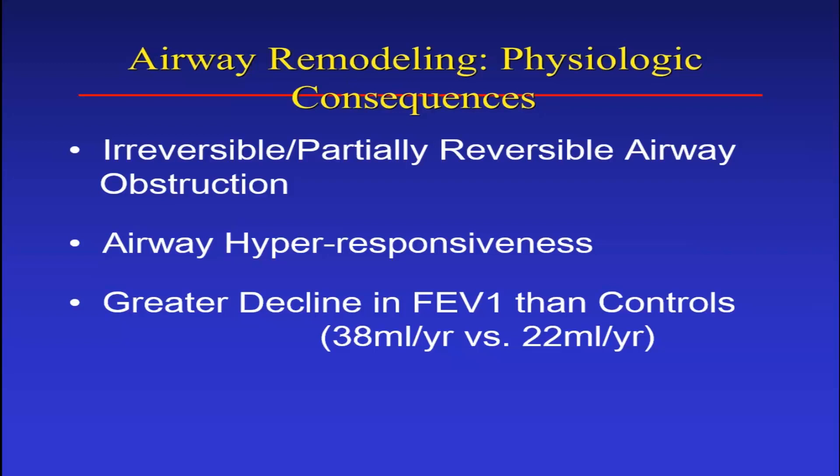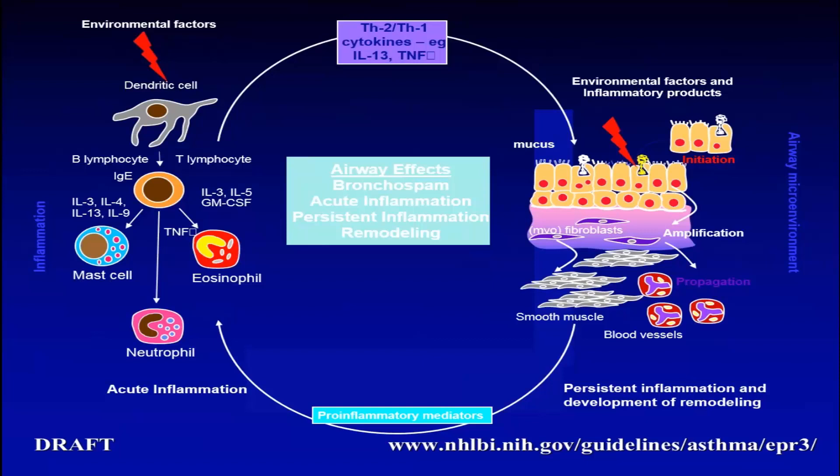Some people think there's no distinction — the so-called Dutch hypothesis of asthma. Airway hyperresponsiveness is probably the main physiologic function associated with remodeling. In asthmatics, even non-smokers, if you compare non-smoker asthmatics to non-smoker controls, they have a greater yearly decline in FEV1. FEV1 generally declines 22 mL per year with aging; in asthma, that decline is as high as 38 mL per year.